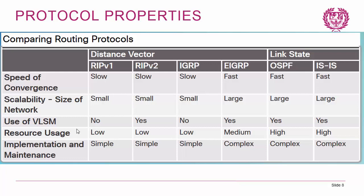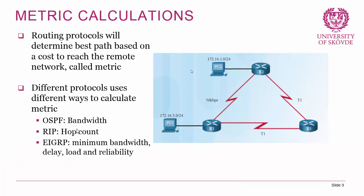As we just discussed, metric is an important part of the routing process because it determines the cost to reach a remote network, and different protocols use different ways to calculate it. OSPF will use bandwidth. RIP will use hop count — namely how many steps there are from the source network to the remote network. EIGRP will use a compound metric consisting of the lowest bandwidth across all links, the total delay, the load on links, and the reliability of the links. We're going to go through that in much more detail later.